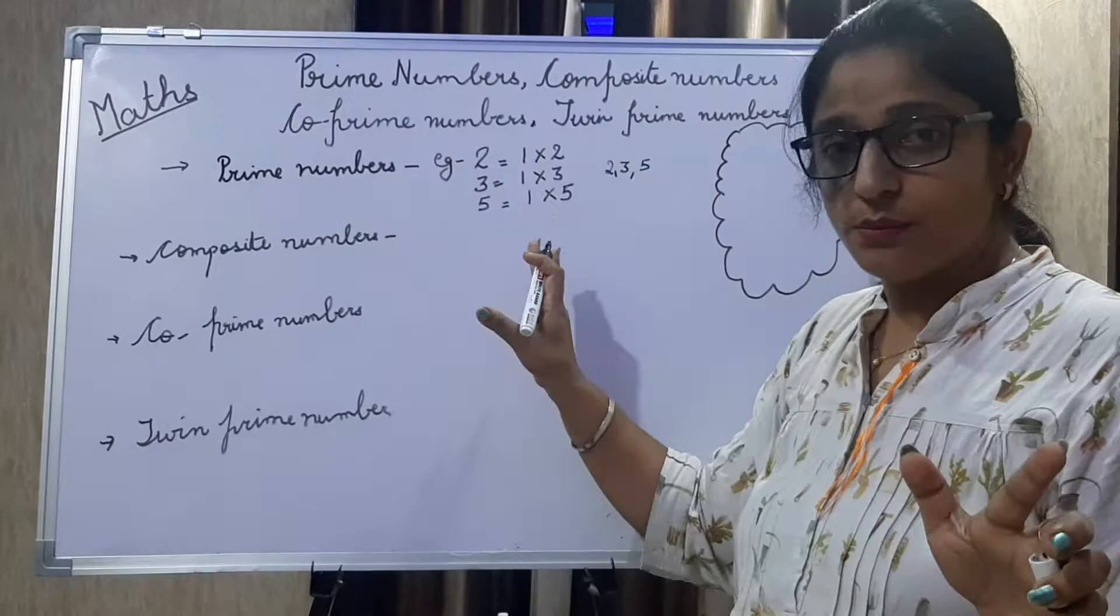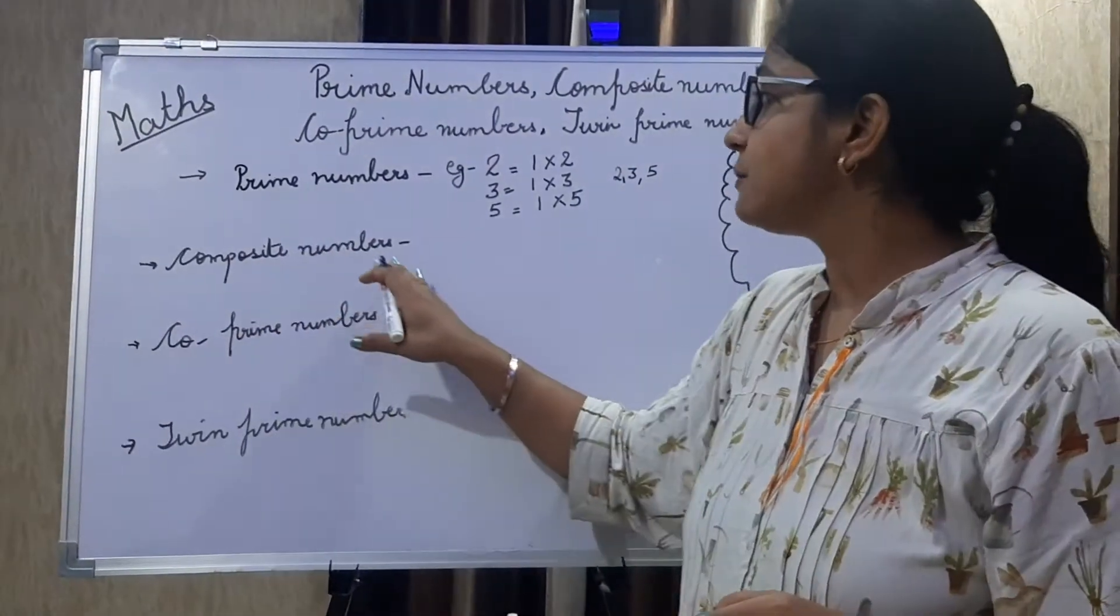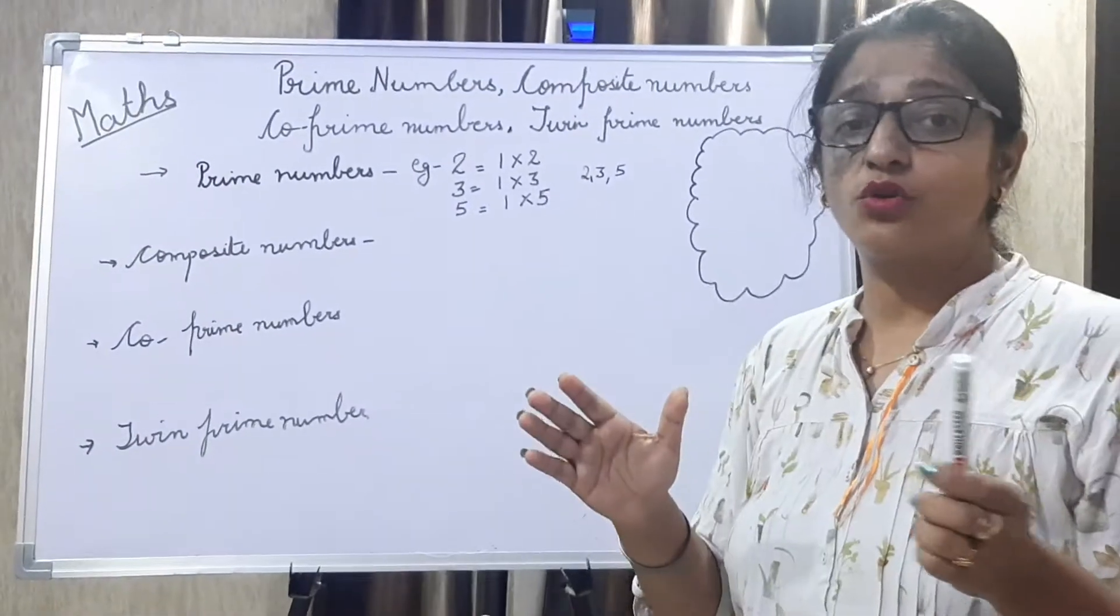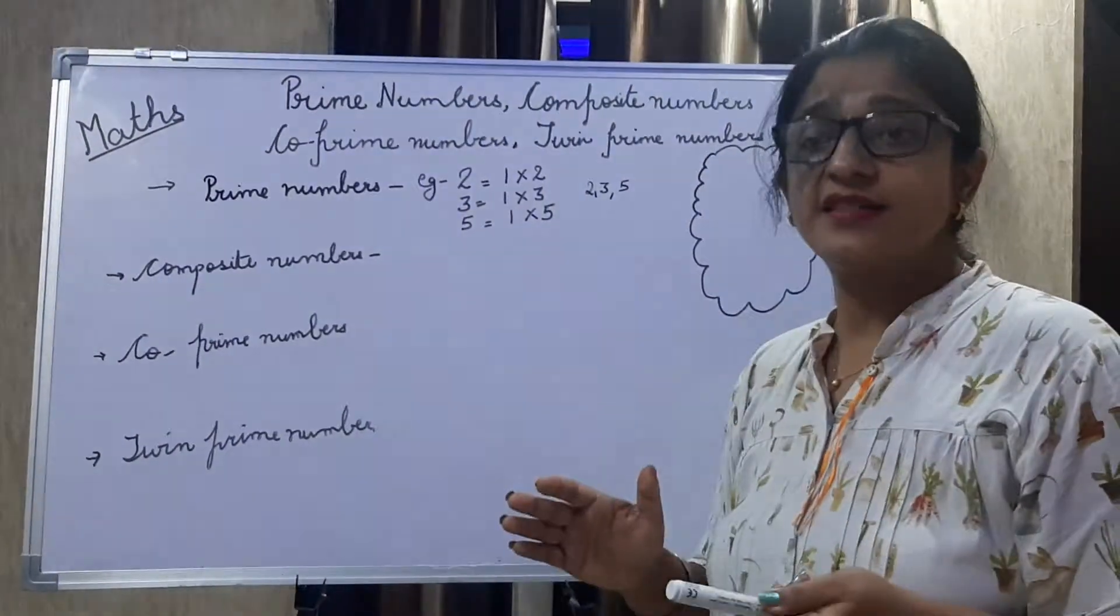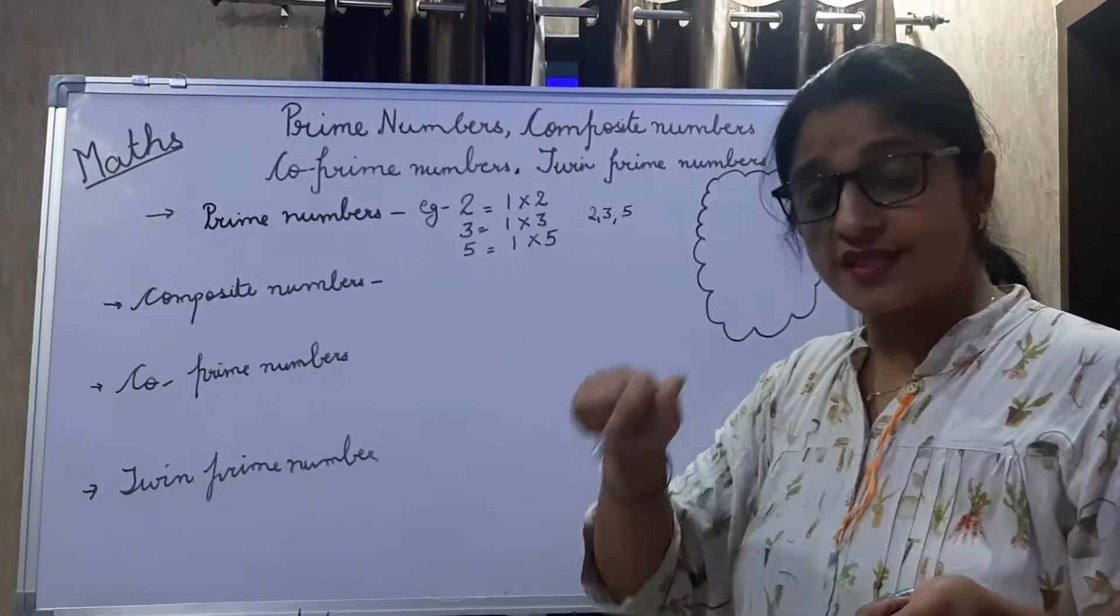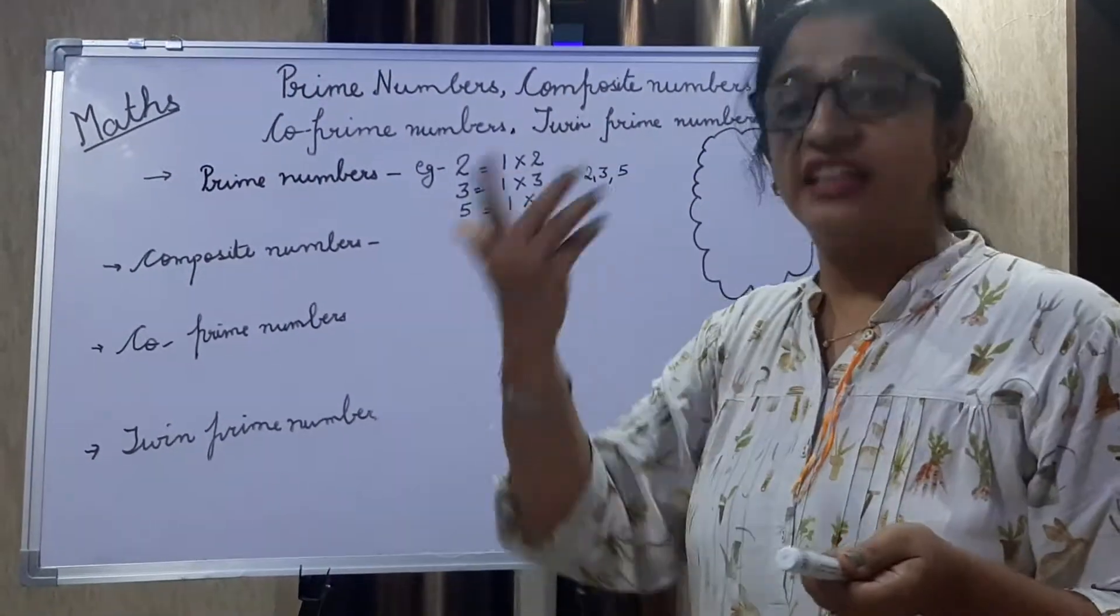So those are the prime numbers. Now let's come to composite numbers. Composite numbers are those numbers whose factors, or we can say, which are divisible by itself and one and other factors also.